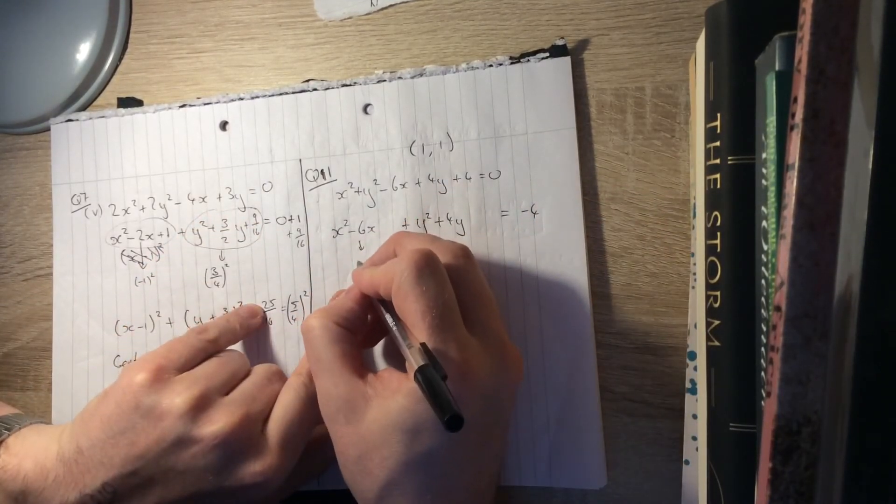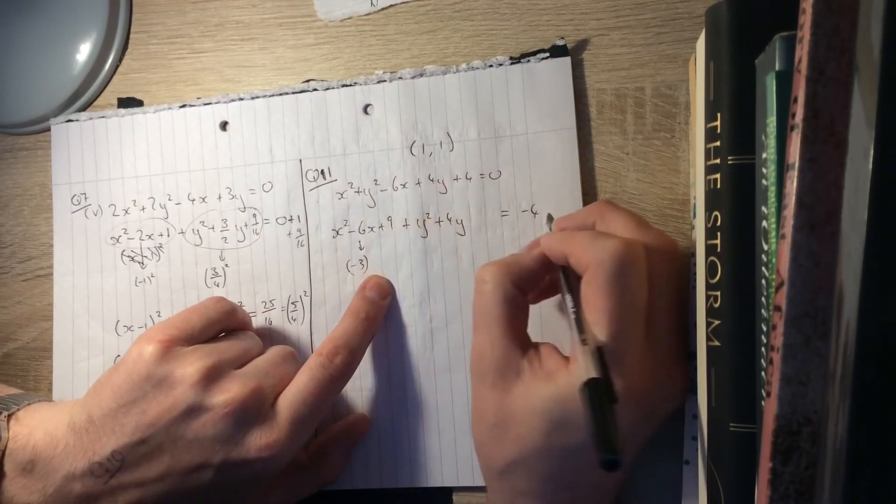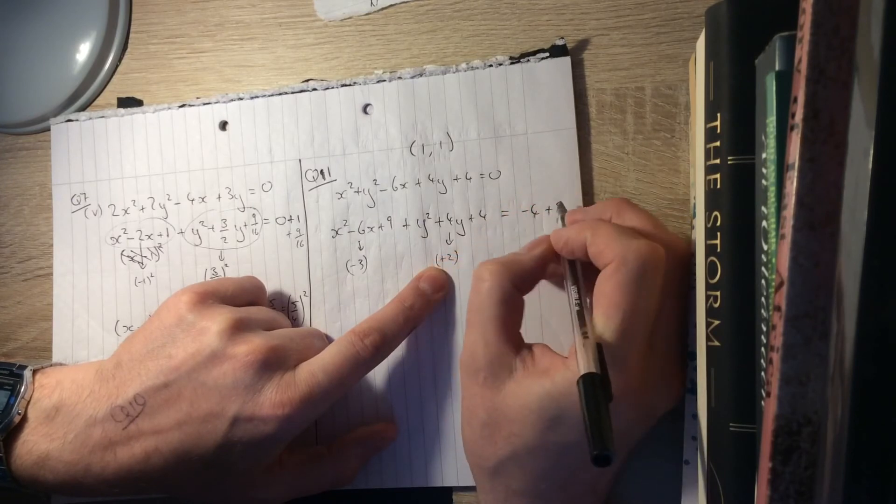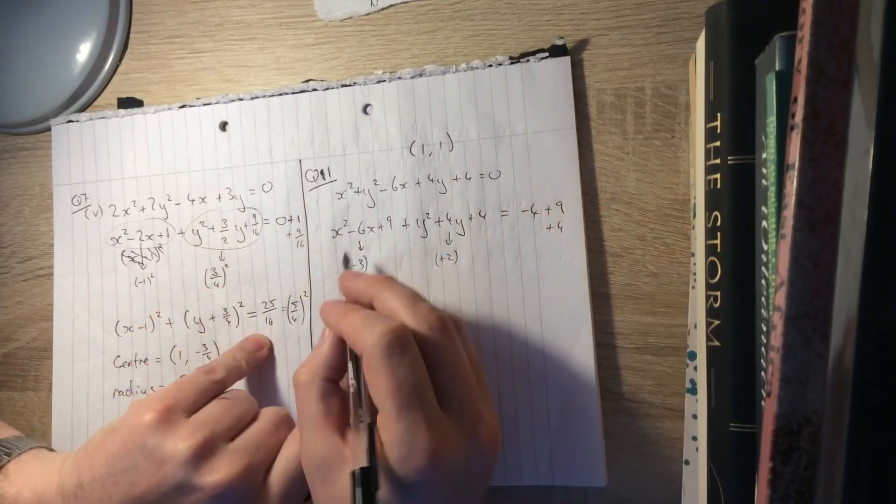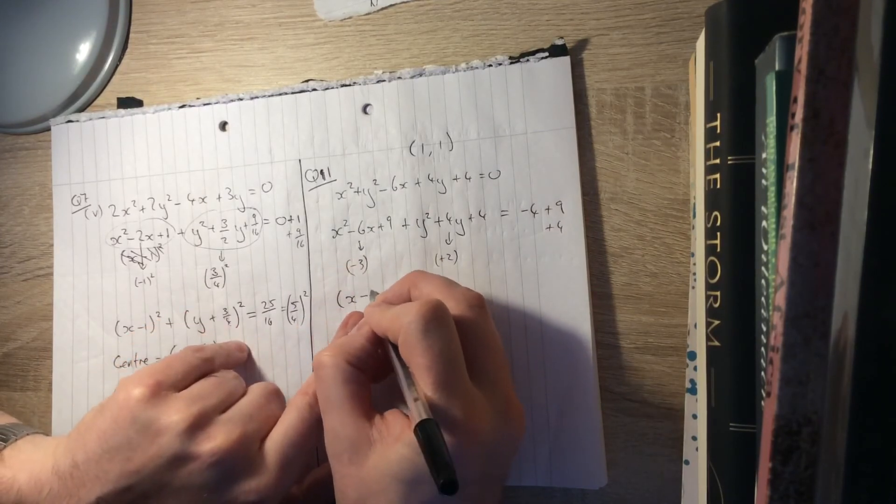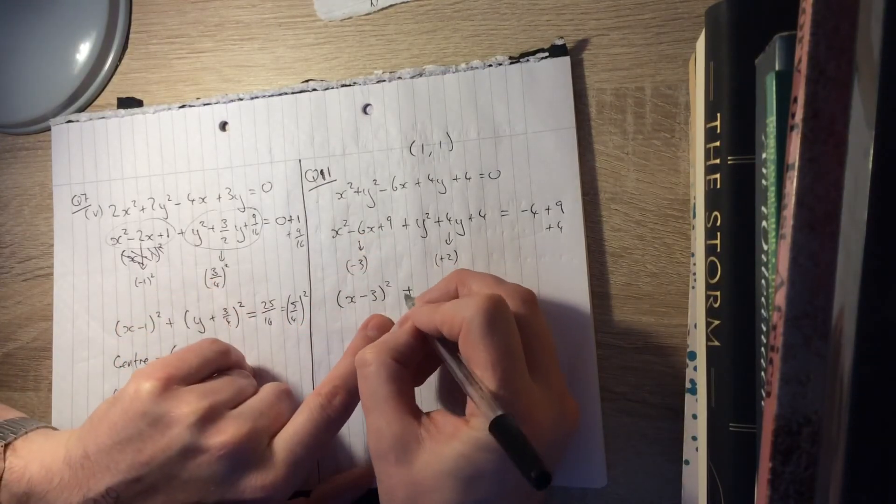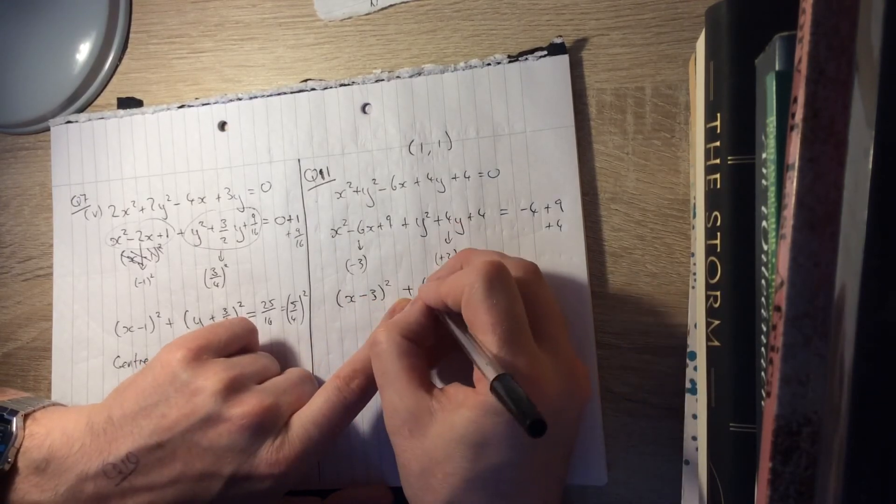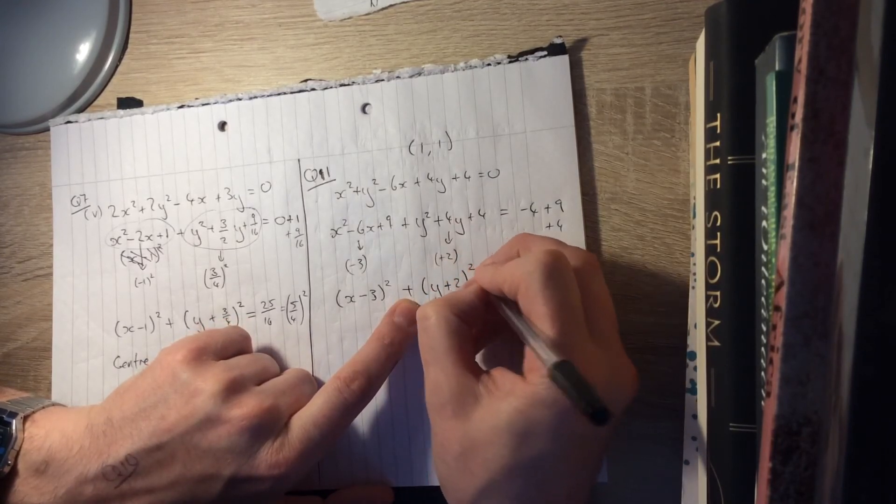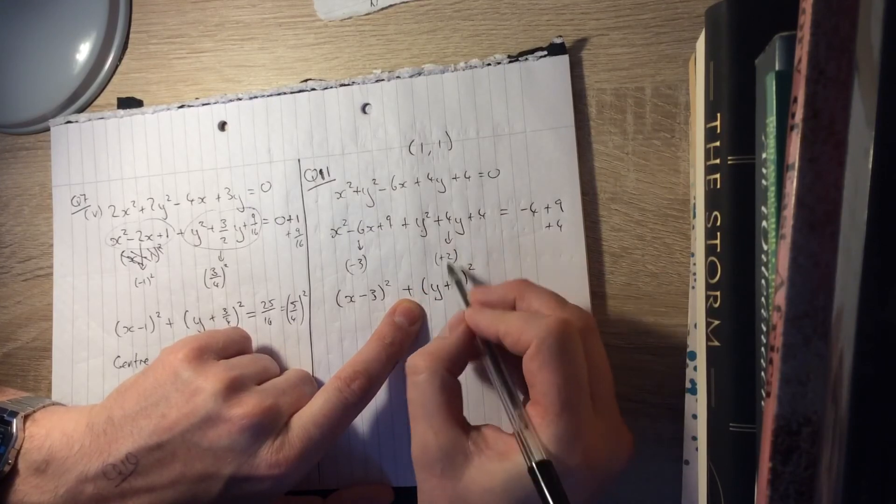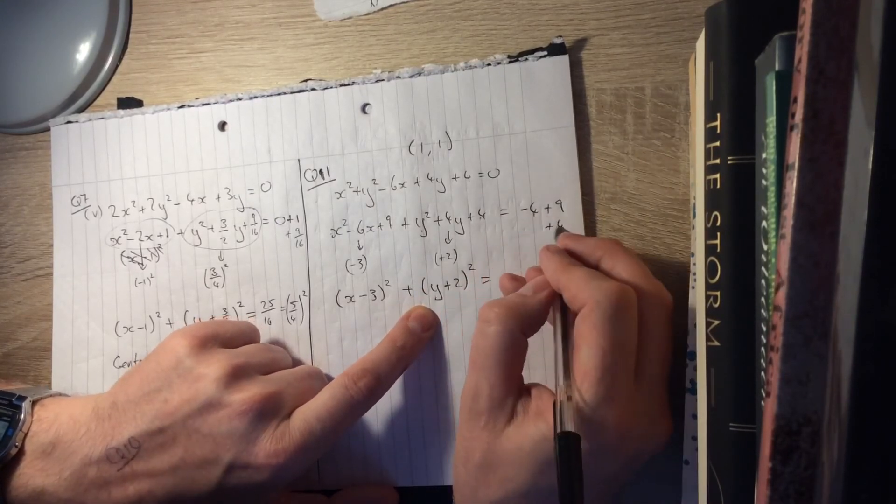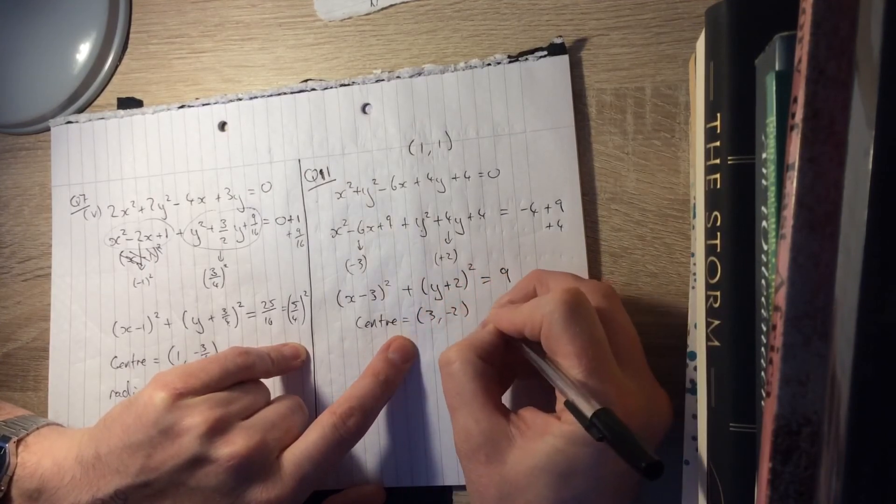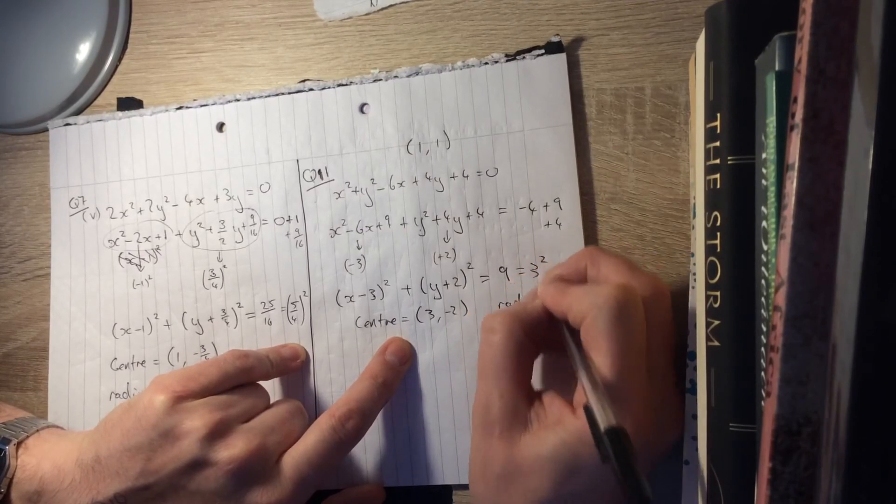Well, half of this number is minus 3, so squared is a plus 9, so you need a plus 9 over here. Half of this number is a plus 2, squared is a plus 4, so you need a plus 4 over here. So this is going to be x minus 3 squared. Check it, square the first, yes, square the second, yes, twice the product is minus 6x, yes. Plus y plus 2 squared. Again, check it, square the first, yes, square the second, twice the product. And that all equals, well, 4 take away 4 is 0, so it all equals 9. So the center here is at 3 minus 2, and the radius, because 9 is 3 squared, the radius is 3.